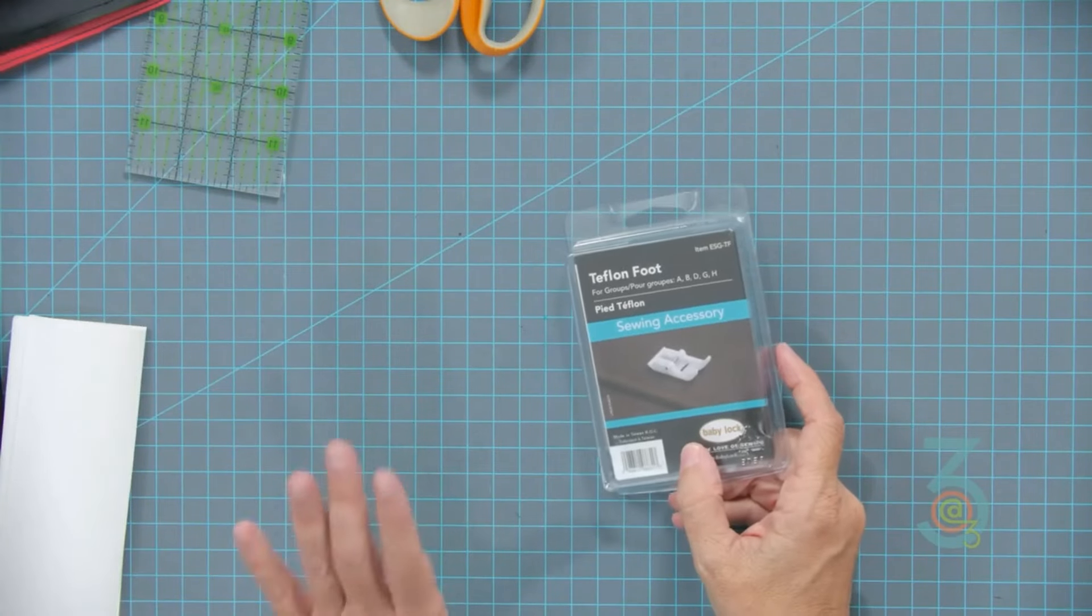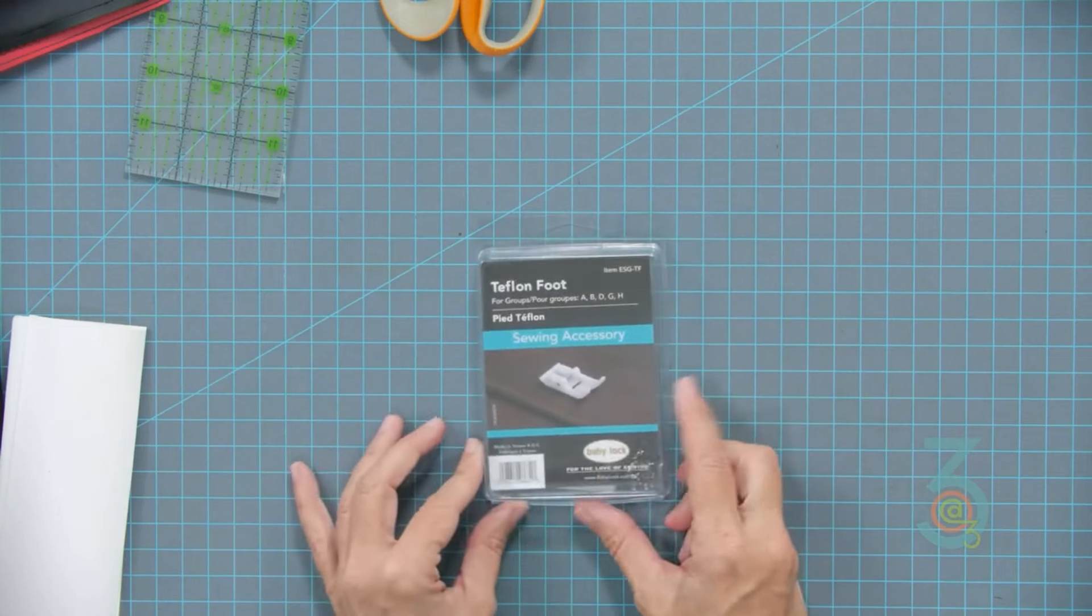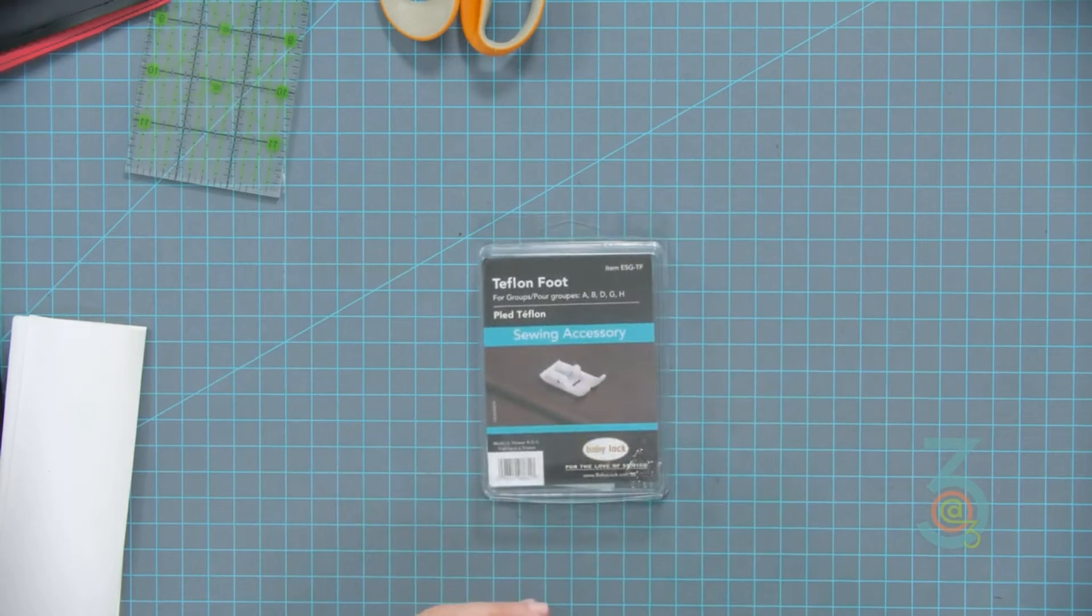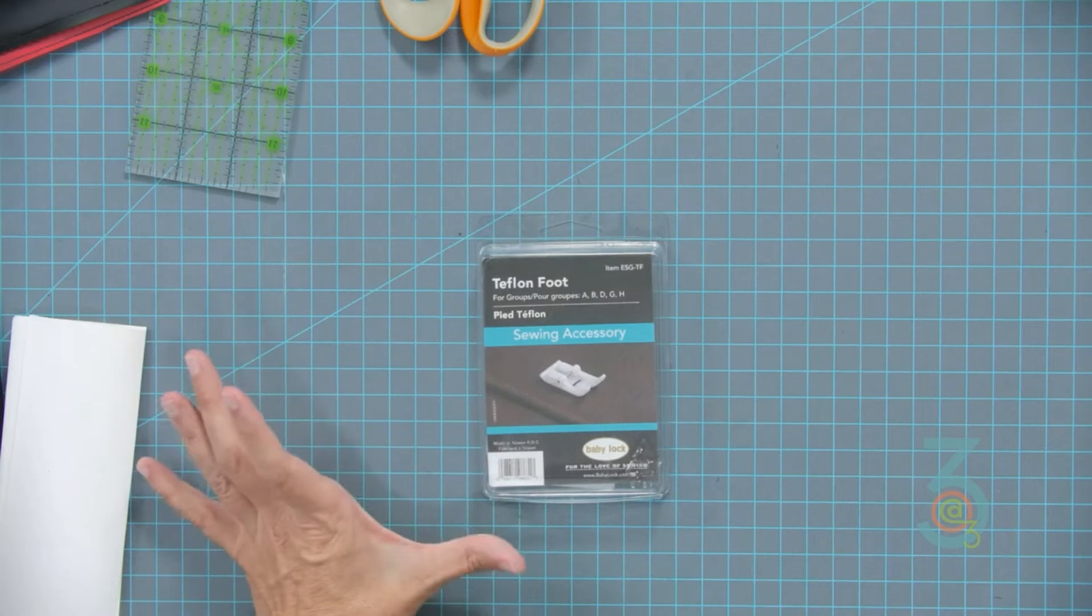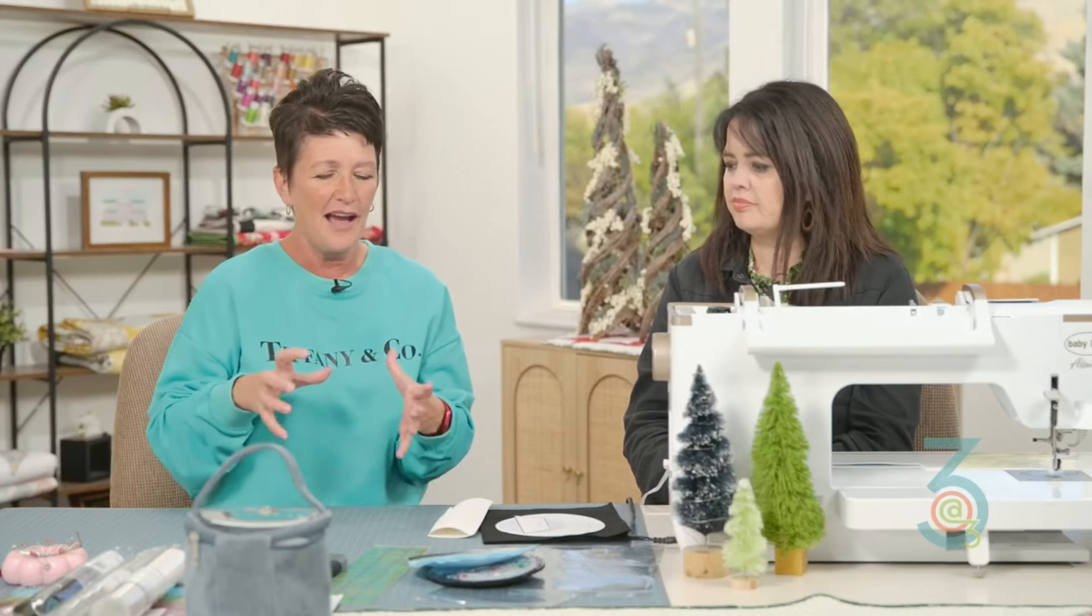We're going to do the sewing first, then we're going to give a few tips. A couple of things I want to talk about first is that we are going to use Kimberbell vinyl. Anytime you use vinyl, I put on a Teflon foot. If you do not have a Teflon foot, I suggest that you invest. It just allows it to glide over material that will tend to stick.